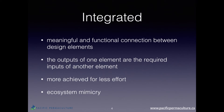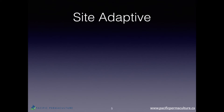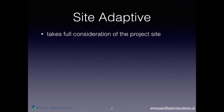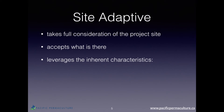The essence of this can be referred to as ecosystem mimicry. Permaculture is site-adaptive, not site-maladaptive. It takes consideration of the project site as one of the first steps. Permaculture accepts what is there rather than forcing what you want to be there. It looks at the characteristics of the site and leverages those as opportunities — characteristics of the climate, the landscape, the water, to name a few.